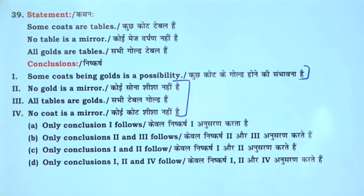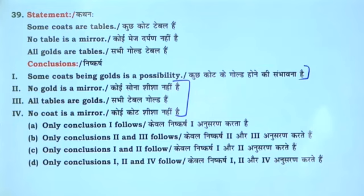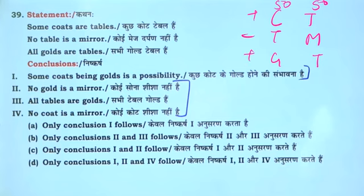All cars are buses — so the possibility: suppose three states — one, two, three. If the first result will be all possible, definite statement. Some quotes are table, some tables are mirror. All golds are table: some quotes are table — 50-50 positive and some table — no table is mirror — 100-100. All golds are table: 150. Some quotes — some quotes being gold is a possibility. Quotes being gold: first and third. So it is 50-50.